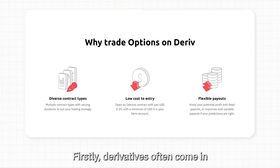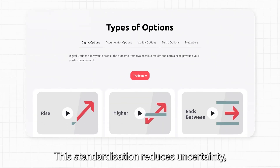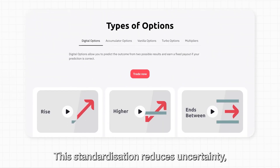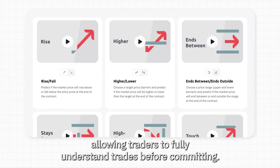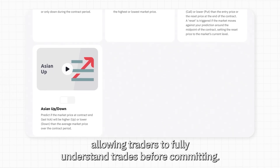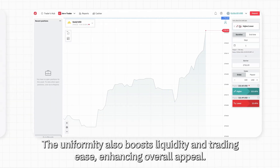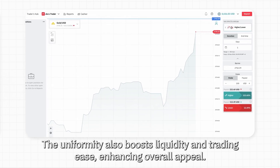Firstly, derivatives often come in standardized contracts with transparent terms and conditions. This standardization reduces uncertainty, allowing traders to fully understand trades before committing. The uniformity also boosts liquidity and enhances overall appeal.